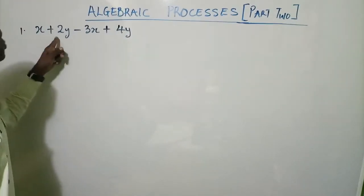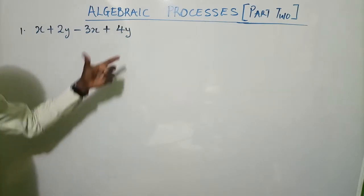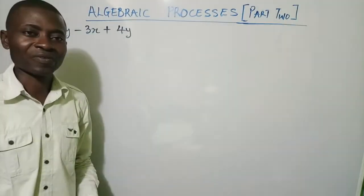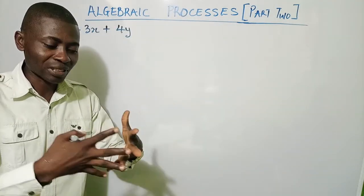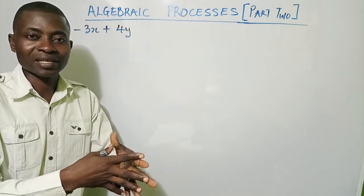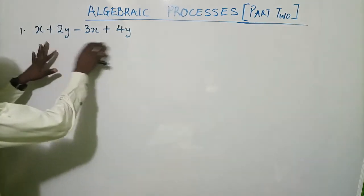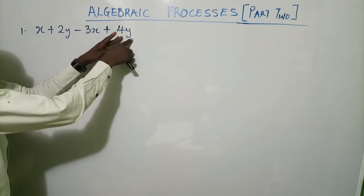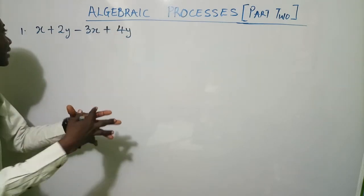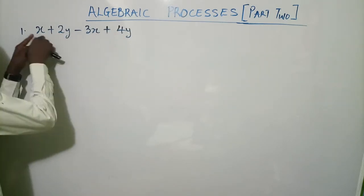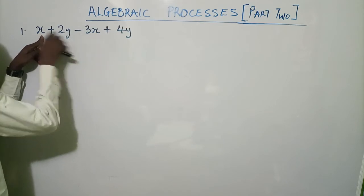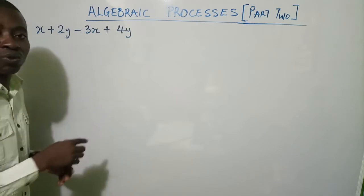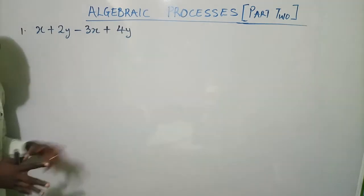The question says simplify: x plus 2y minus 3x plus 4y. What does it mean to simplify? That means they want you to pick the ones that are common — the like terms — together. From the board we can see this is x, this is y, this is x, this is y. Like terms means those that have the same alphabet.